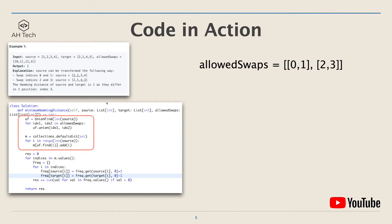Let's walk through example one. The allowSwaps array contains two sub-arrays: [0, 1] and [2, 3]. The first step is to create the Union-Find data structure on allowSwaps, and then create the hash map m based on the Union-Find.